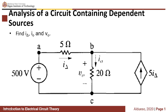For the next example, we have an analysis of a circuit containing dependent sources. For this given circuit, we need to find I-delta, I-O, and V-O. This circuit contains a dependent source — we have a current controlled current source, so the value of this current source depends on the value of I-delta, which is located here in this branch.